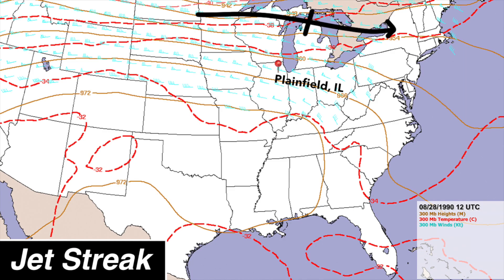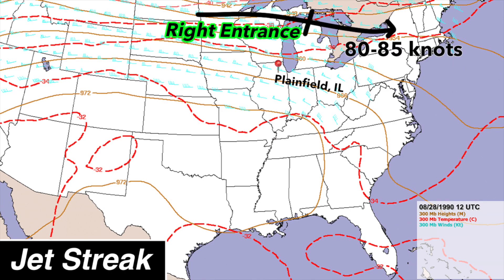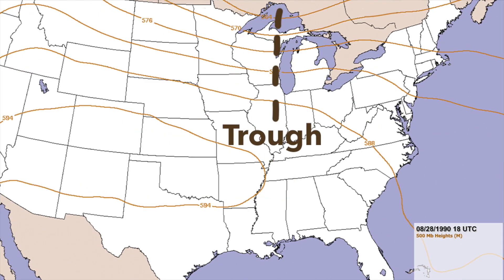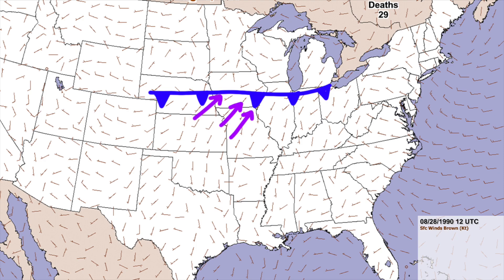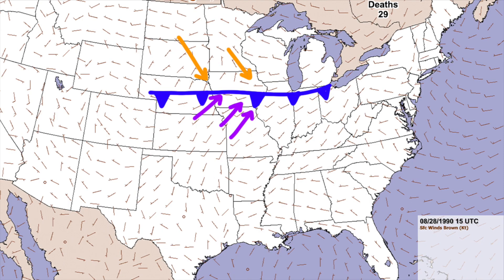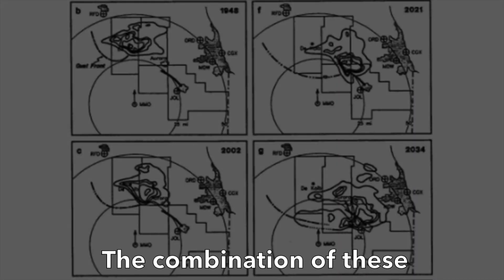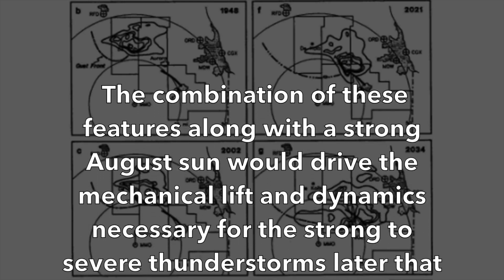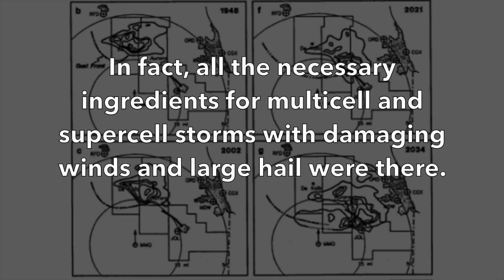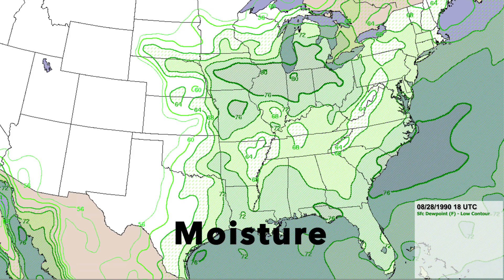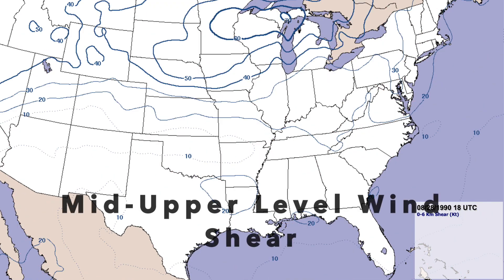On Tuesday, August 28, 1990, a 250 millibar jet stream was positioned along the U.S.-Canadian border, putting northern Illinois just south of the right entrance quadrant of the jet streak. Upper-level winds were analyzed to be around 80 to 85 knots — near record levels for late August. An upper-level shortwave trough was moving through the Great Lakes area, dragging a cold front southward through southern Wisconsin and northern Illinois. Surface winds ahead of the front were out of the southwest, while behind it were out of the northwest. The combination of these features, along with a strong August sun, would drive the mechanical lift and dynamics necessary for strong to severe thunderstorms. All necessary ingredients for multi-cell and supercell storms with damaging winds and large hail were present, including moisture, instability, lift, and wind shear at the mid and upper levels.